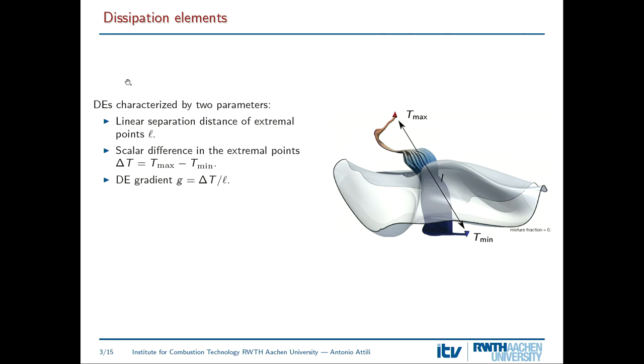Each dissipation element goes from a local minimum to a local maximum of the temperature field. You can parameterize this object with two values: one is the difference between the scalar values at the two extremal points — T_max minus T_min — and another is the linear length between those two points. You can also build derived parameters such as the gradient, ΔT divided by L. We are interested in analyzing the statistics of these two observables and relating them to the structure of the flame.